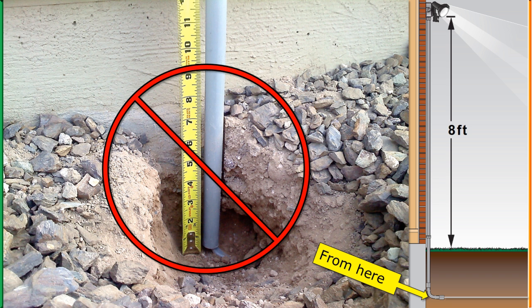In most cases, table 300.5 will tell you that that direct buried cable needs to be at least 18 to 24 inches deep. There are certain provisions that would allow it to go as shallow as 12 inches. But most of the time, 18 to 24 inches.